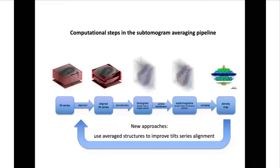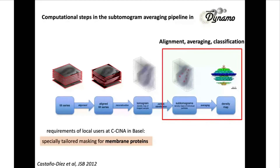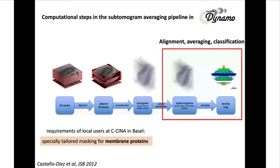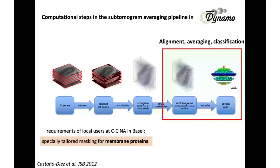I will start presenting Dynamo at the part of the pipeline where you go from the sub-tomograms into your first average, your density map. I start here because that reflects the historical development of Dynamo, which we began developing especially with membrane proteins in mind, because membranes are a big intensity feature that make normal approaches fail — and that was the origin of the software.